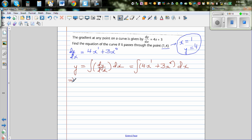So you can say this implies y is equal to 4x squared over 2 plus 3x to the power of 1 over 1 plus c. So you can say this implies simplifying this would be 2x squared plus 3x plus c.